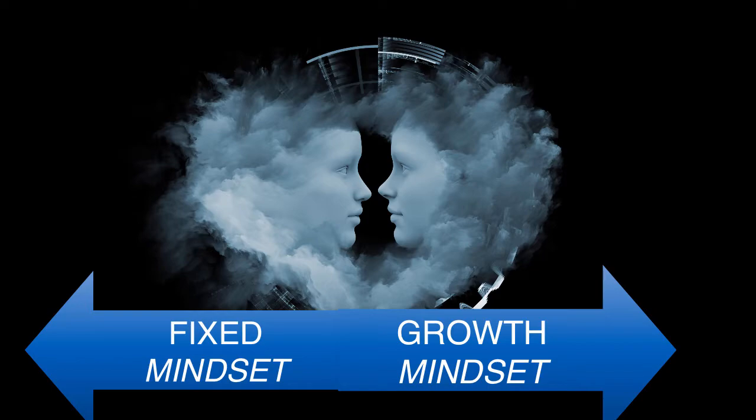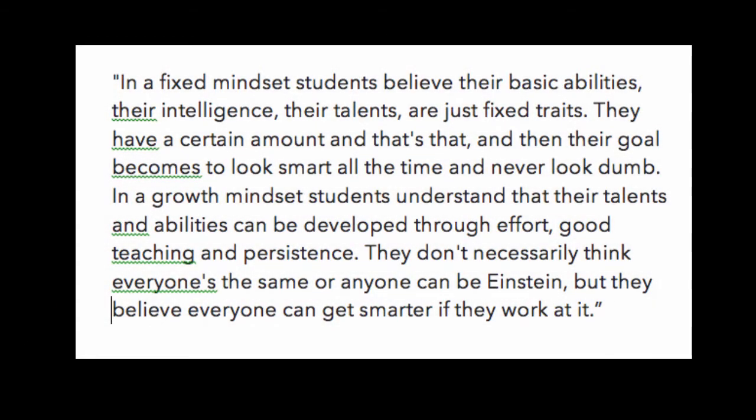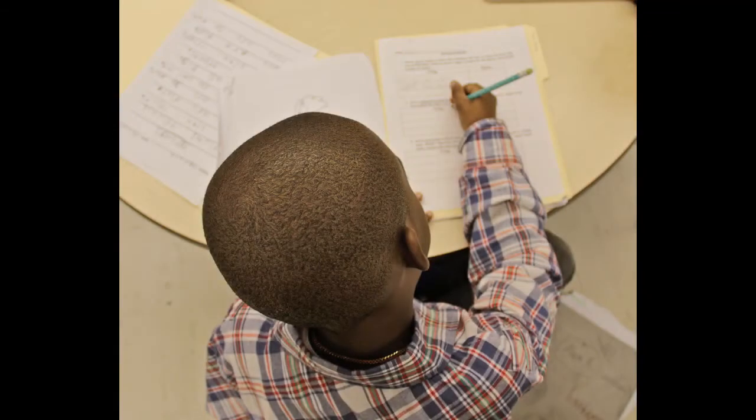Carol Dweck explains, and I quote: In a fixed mindset, students believe their basic abilities, their intelligence, their talents are just fixed traits. They have a certain amount, and that's that. And then their goal becomes to look smart all the time and never look dumb. In a growth mindset, students understand that their talents and abilities can be developed through effort, good teaching, and persistence. They don't necessarily think everyone's the same or anyone can be Einstein, but they believe everyone can get smarter if they work at it. End quote.